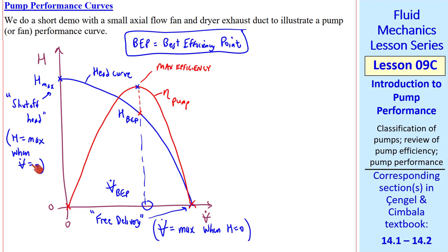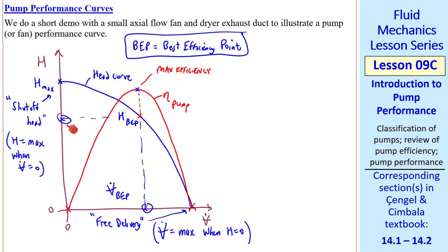And I added this comment, H equal max when V dot is zero, to go along with this comment I had made earlier, V dot is max when H equals zero. But somewhere in between these two extremes is the best efficiency point, where we have a decent head and a decent volume flow rate. But V dot BEP is below the free delivery, and H BEP is below the shutoff head.